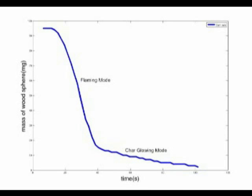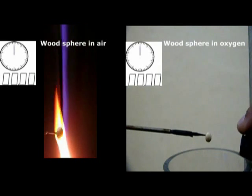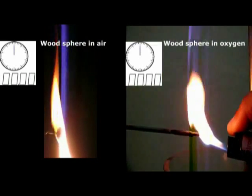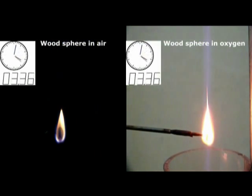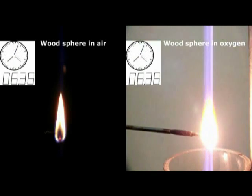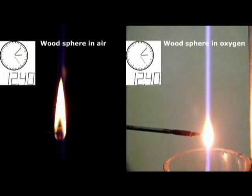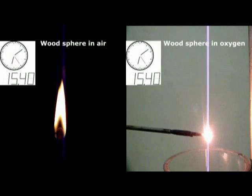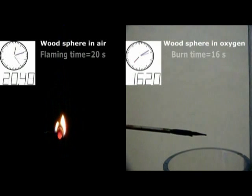Volatile combustion occurs faster than char oxidation. A comparison of the combustion of a wood sphere in air and oxygen as the oxidants is shown here. The flame is brighter with oxygen and the wood sphere burns faster and fragments as well because of the sharp heating of the solid. The total combustion time of the wood sphere with oxygen is about 16 seconds, whereas the flaming time with air is 20 seconds and the total burn time is 85 seconds.